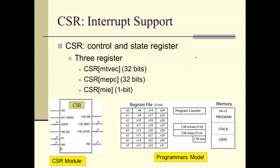The CSR — Control and Status Registers — is a block in the microcontroller with essentially three registers. Two of them are 32-bit address registers, and one is a single-bit register which is the interrupt enable. There's the vector register MTVEC, a PC register MEPC, and the interrupt enable MIE.